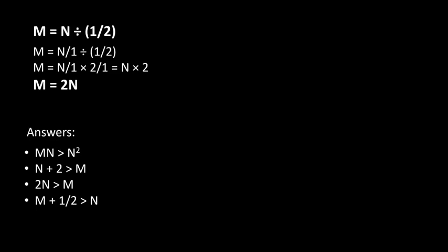Let's begin with the first answer. We have MN is greater than N squared. We substitute M with 2N to get 2N squared is greater than N squared. Since N squared is always positive, it doesn't change the direction of the inequality and we can say that 2 is greater than 1. That is correct.